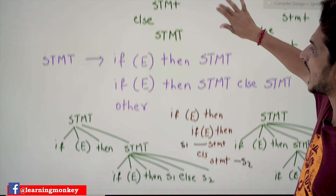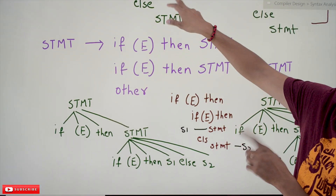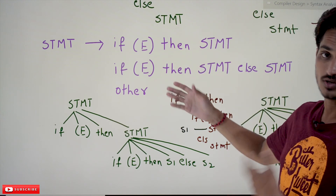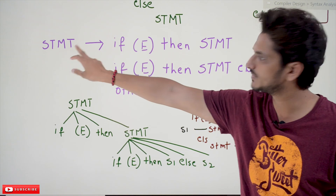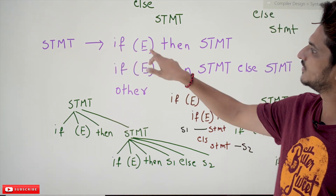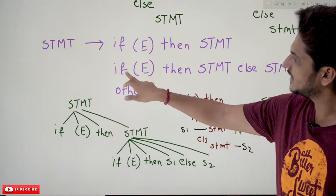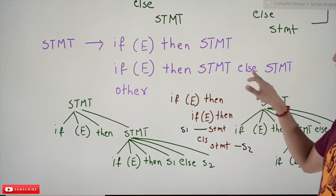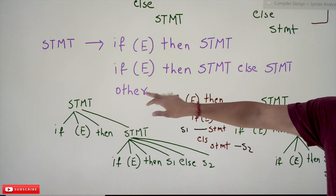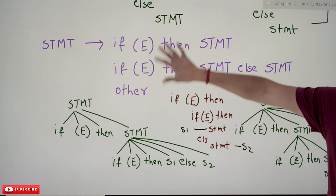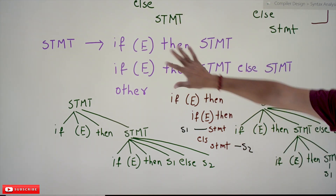During the compilation phase, we have to identify how to handle these if-else statements. This is an ambiguous grammar for identifying if-else statements. The statement production is: statement → if expression then statement, and another production: statement → if expression then statement else statement, along with other statements. This is the ambiguous grammar.